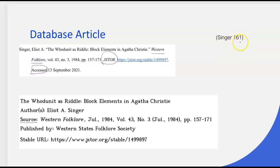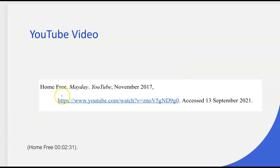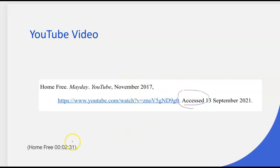Finally, for your YouTube video — it was interesting to see what you guys showed me. Here is my example: you have the name of the artist or author, the title of the video which would be italicized according to how to cite an online video, then the name of the source, the date it was published, and then the date you accessed it after the link. For an in-text citation of a YouTube video, you would put the name of the author and then a timestamp — for example, two minutes and 31 seconds into the video.